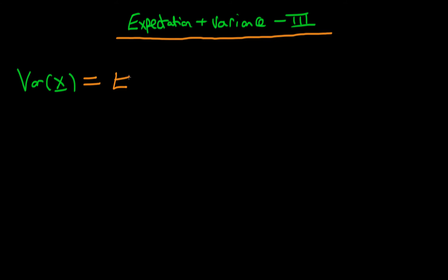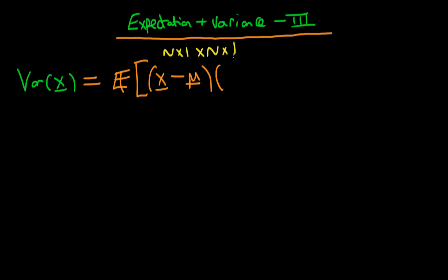The variance of a random vector x is defined as being equal to the expectation of (x minus the mean of x) times — well, you might think it's just that whole thing squared, but remember that this thing has dimensions. So here we define the variance of x as being equal to the expectation of (x minus mu) times (x minus mu) transpose.